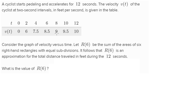After eight seconds, velocity is nine feet per second. Consider the graph of velocity versus time. Let capital R of six be the sum of the areas of six right-hand rectangles with equal subdivisions. It follows that capital R of six is an approximation for the total distance traveled in feet during the 12 seconds. What is the value of capital R of six?